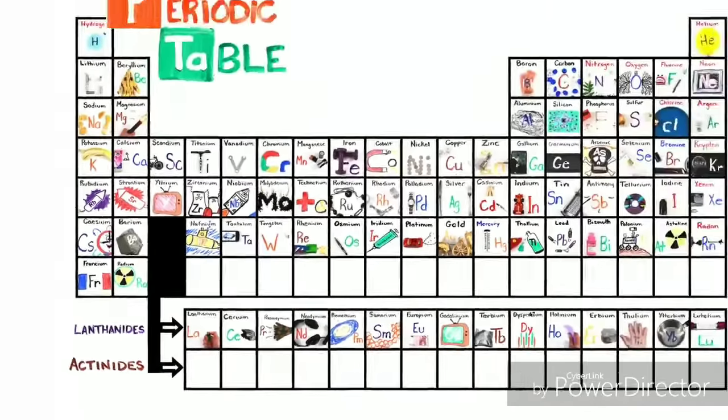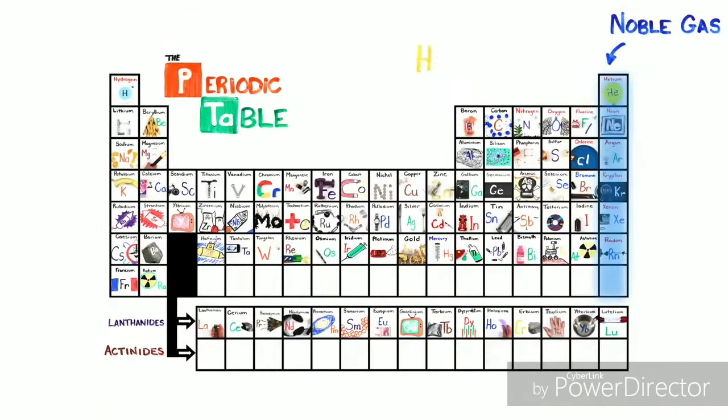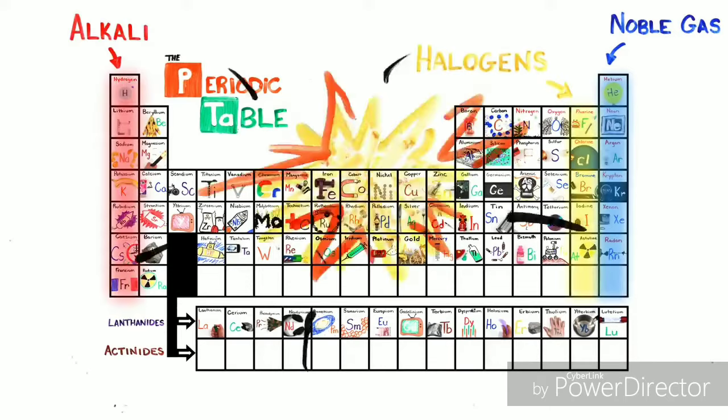This is the Periodic Table. Noble gas is stable. Halogens and alkali react aggressively. Each period will see new outer shells while electrons are added to the right.